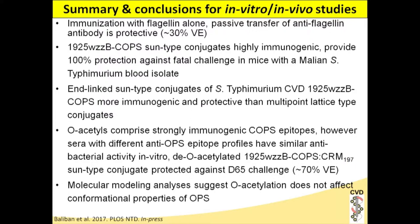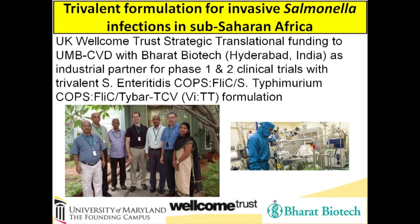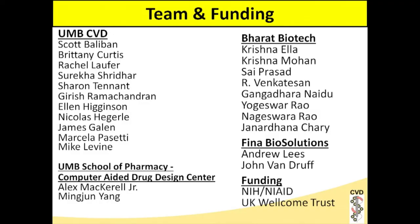In summary, we've identified an effective Salmonella typhimurium glycoconjugate formulation and the critical quality attributes: preservation of O-acetyls and using an end-linked rather than lattice-type conjugate. Moving forward, we're using this typhimurium conjugate in formulation with a comparably optimized enteritidis conjugate, formulated with partners at Bharat Biotech in Hyderabad, India, under Wellcome Trust funding with their typhoid conjugate vaccine, TyRTCV, in a trivalent formulation for sub-Saharan Africa. Funding was from the Wellcome Trust and NIH.